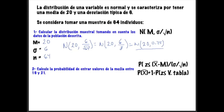Ahora nos piden calcular la probabilidad de que se tengan valores de la media entre 19 y 21. Para ello, vamos a utilizar esta fórmula. Nos están pidiendo un intervalo, entonces tendremos que utilizar la misma fórmula adaptada para un intervalo determinado.